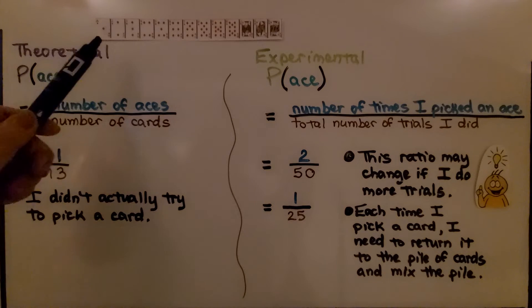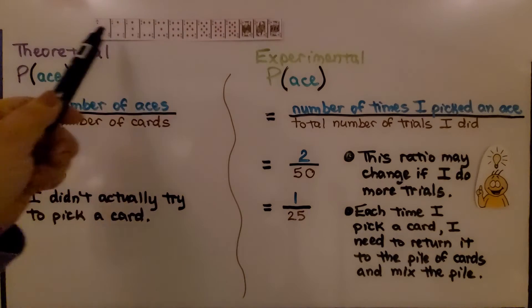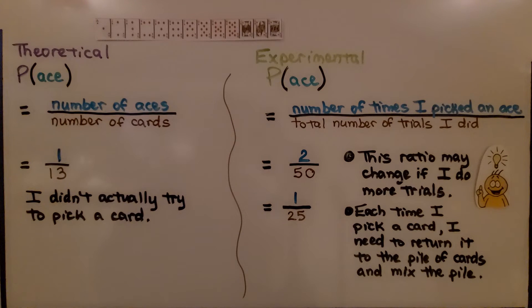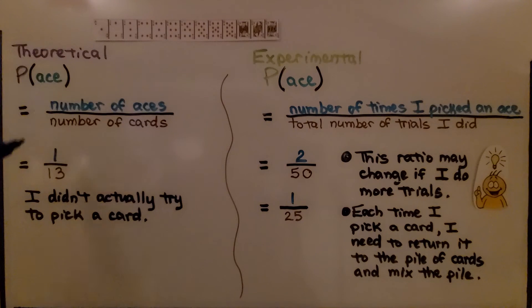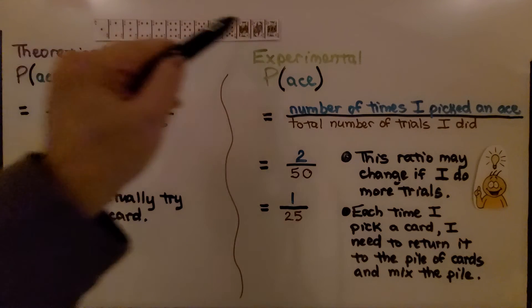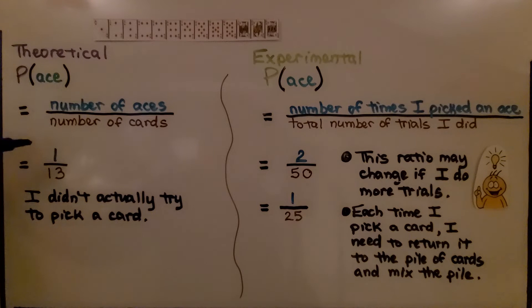Here we have our suit of diamonds. There are 13 cards going from ace to king. For the theoretical probability of picking an ace, the event is ace. It would be the number of aces — there's only one — to the number of cards, which is 13. So theoretically, the probability would be one thirteenth.